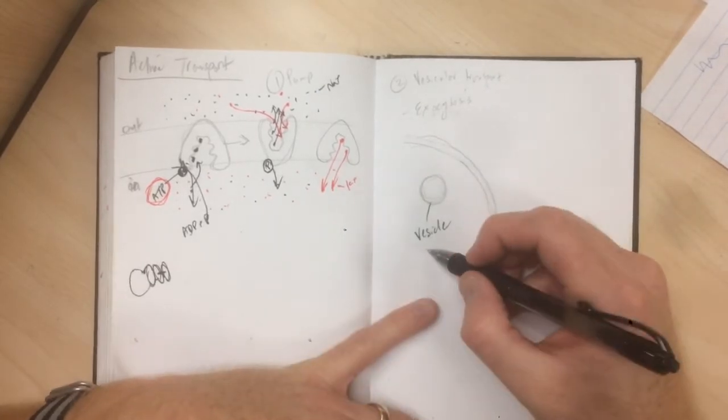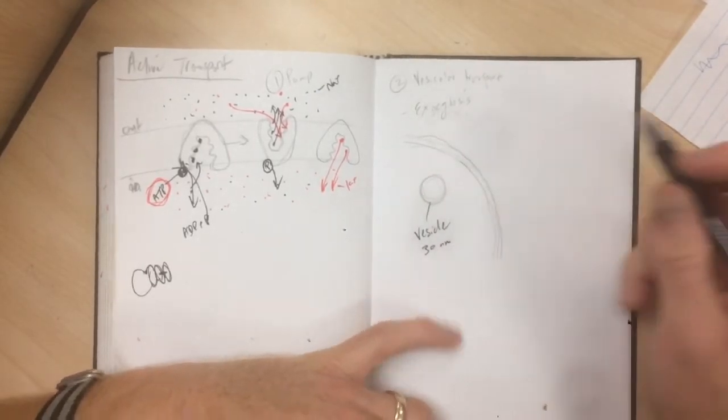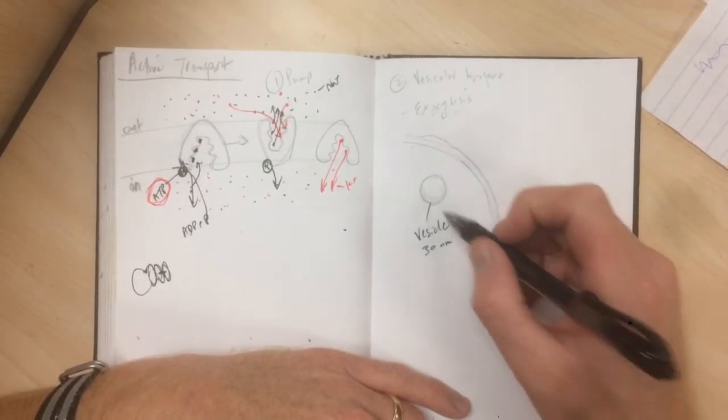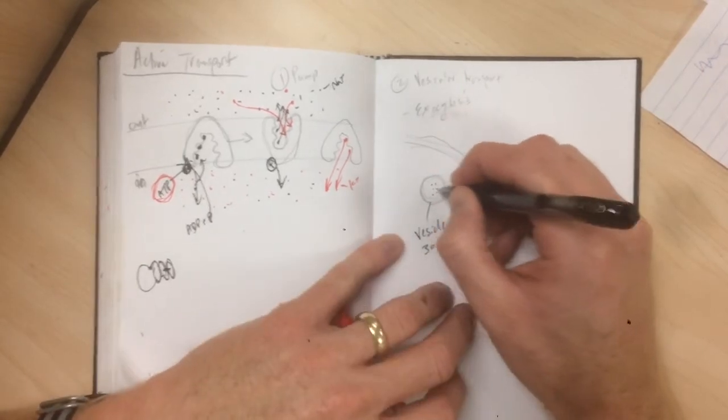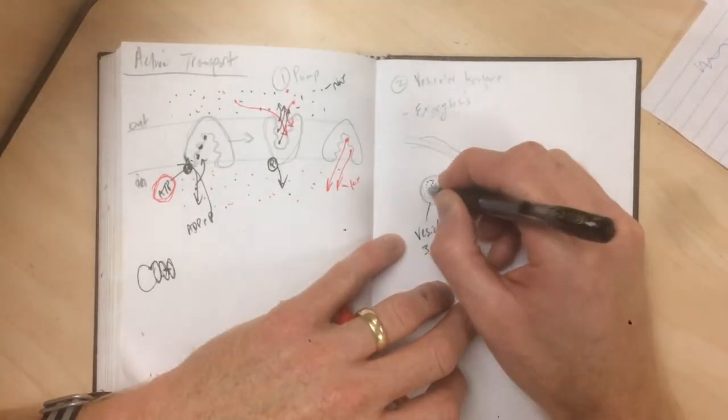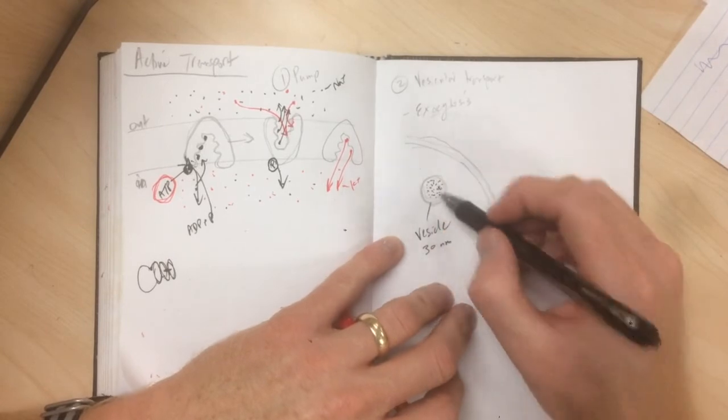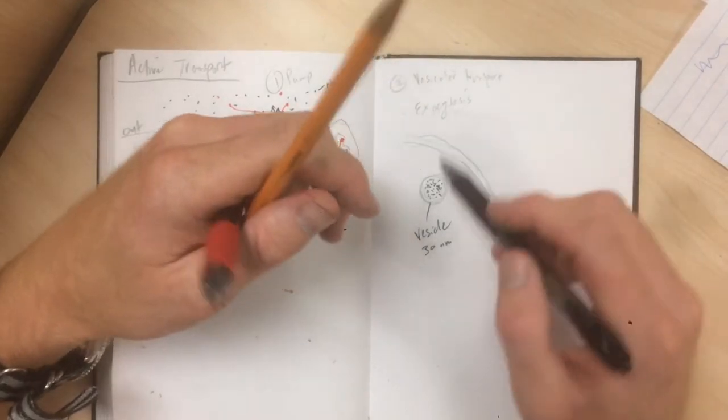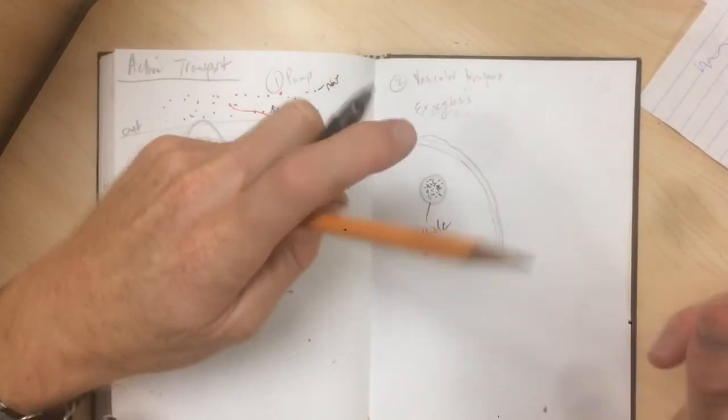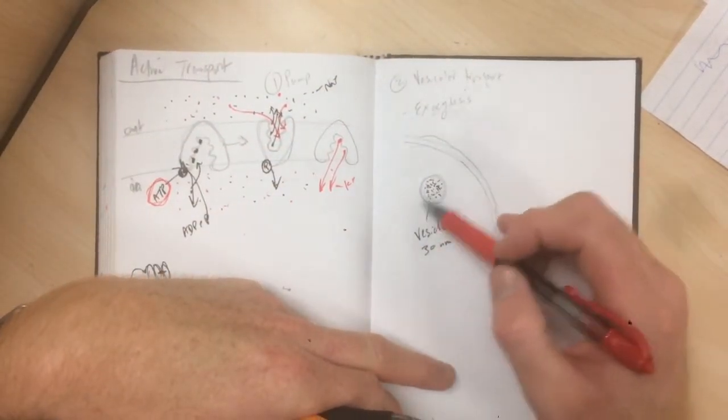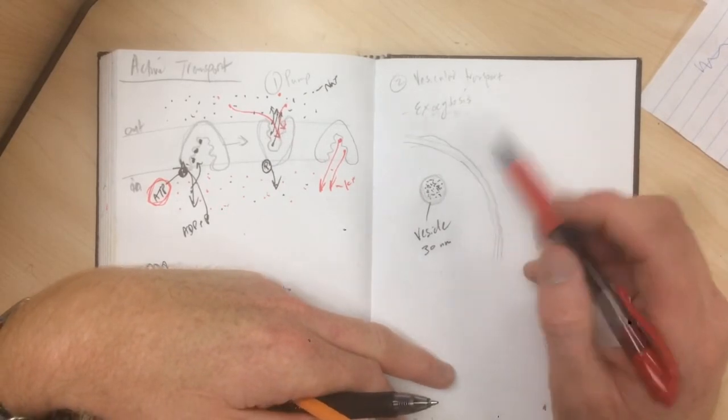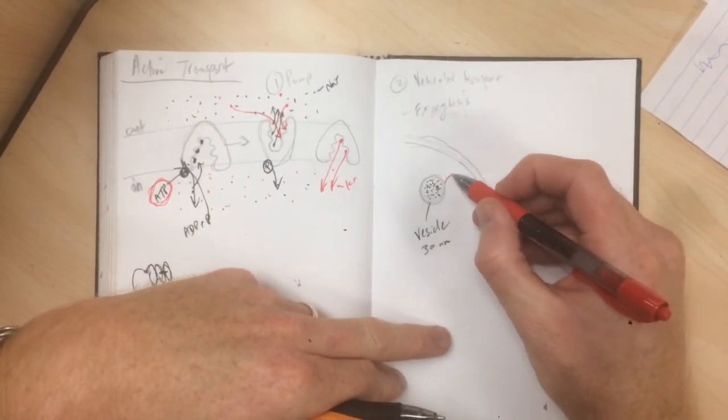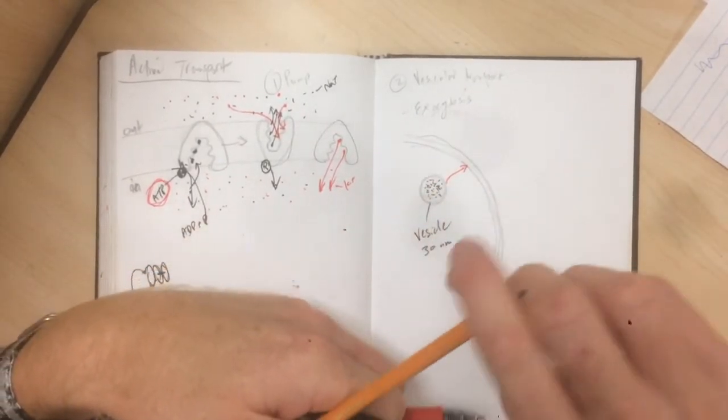They're tiny. They're probably like 30 nanometers in diameter, which means you would have to line up 30,000 of them end-to-end before you got a millimeter. So they're tiny, and they might contain a bunch of little chemicals. A lot of times they'll contain neurotransmitters like serotonin or acetylcholine. So they contain these little chemicals. And what happens is if the cell wants to release these chemicals into that extracellular space, all it does is it just brings this vesicle in close proximity to the cell membrane.